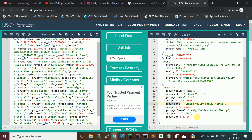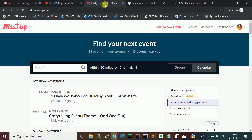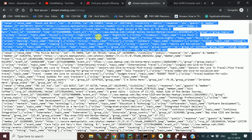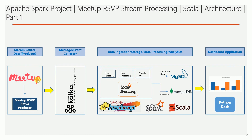Once we get the stream message, we are going to write a Kafka producer that takes messages from the meetup stream API and publishes them to a Kafka broker on a particular topic — I have a meetup RSVP topic set up.